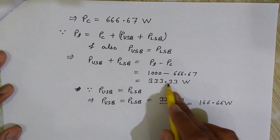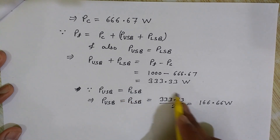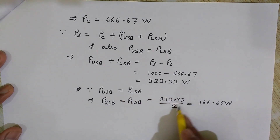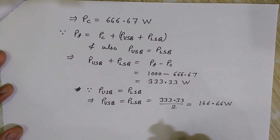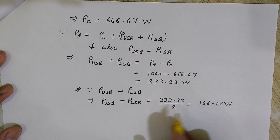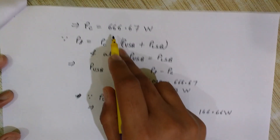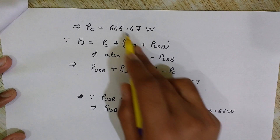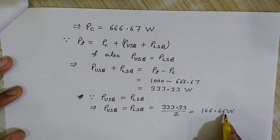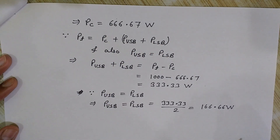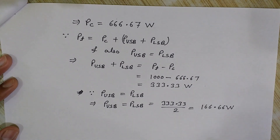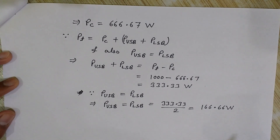Since upper and lower sidebands are equal, each gets half: 333.33 / 2 = 166.66 watts. So upper sideband = 166.66 W, lower sideband = 166.66 W, and carrier power = 666.67 W. The sum of all three equals 1000 watts, confirming the result. Subscribe to Engineering Made Easy for more such problems.